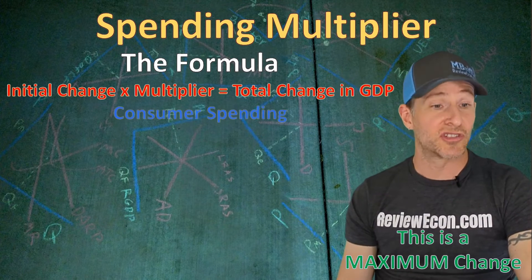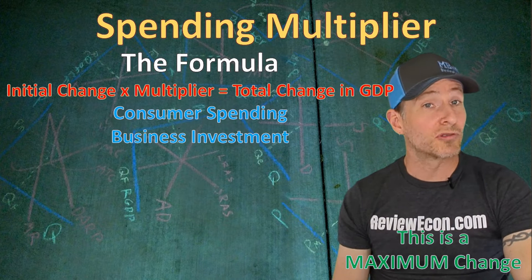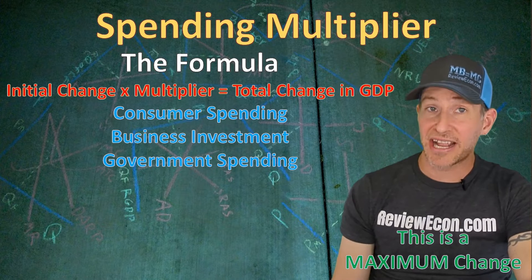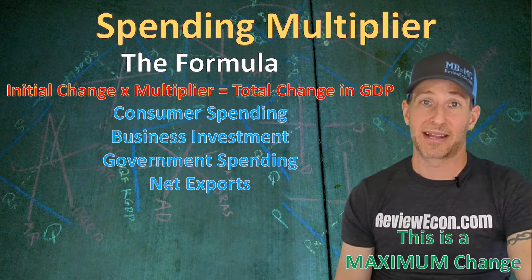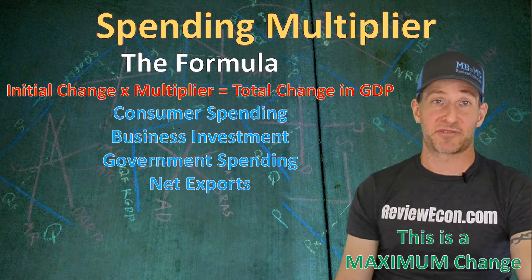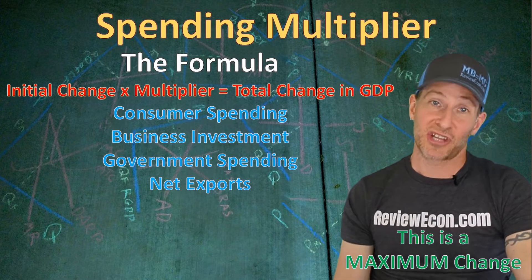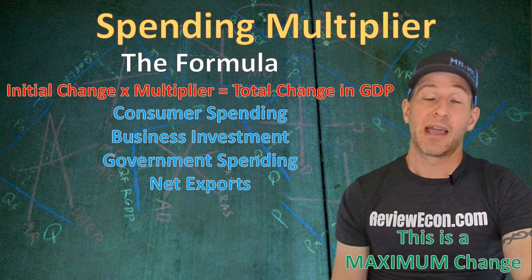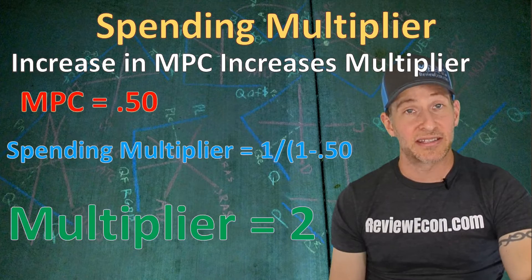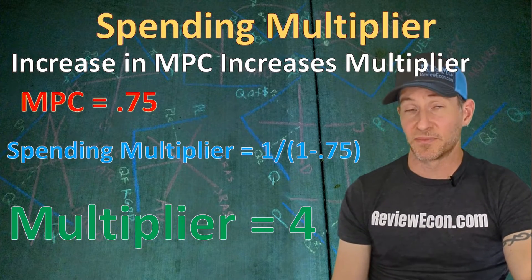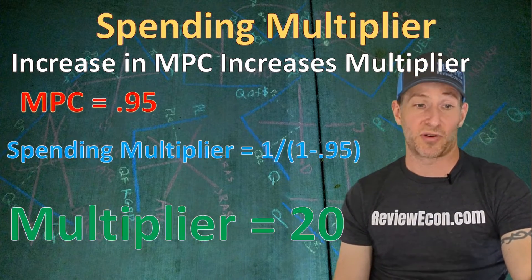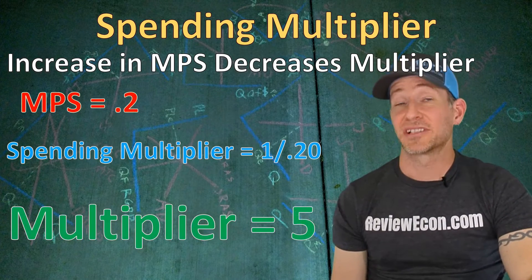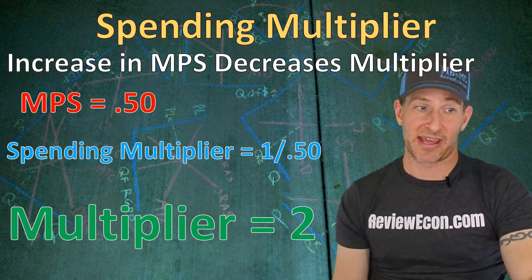This applies to any new consumer spending, new gross investment or business spending, new government purchases, and changes in net exports — which is exports minus imports. These are maximum changes, because in reality there could be leakages, like increases in taxes or increases in imports. Because of the way the formula is calculated, increases in the marginal propensity to consume will increase the spending multiplier, while increases in the marginal propensity to save will decrease the spending multiplier.